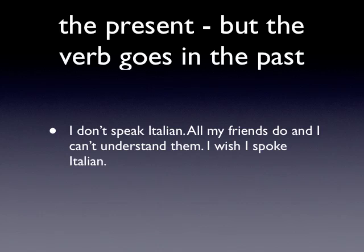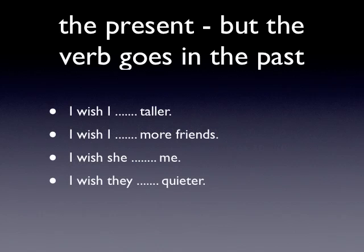For example: 'I don't speak Italian — all my friends do and I can't understand them. I wish I spoke Italian.' Notice it's not 'I wish I speak' — it's 'I wish I spoke.' More examples: 'I wish I were taller' — both 'was' and 'were' are possible. 'I wish I had more friends' — the verb goes in the past: 'had.' 'I wish she liked me' — 'liked' in the past. 'I wish they were quieter' — 'were' in the past. But the idea is about the present.